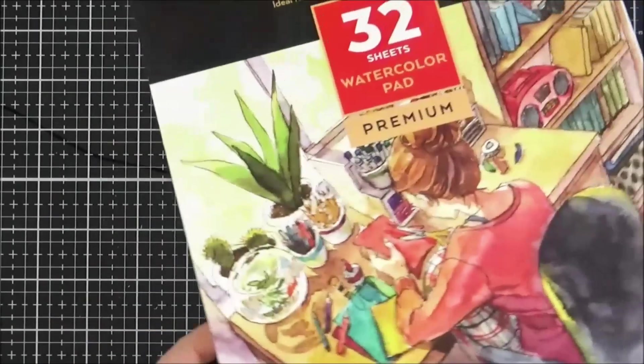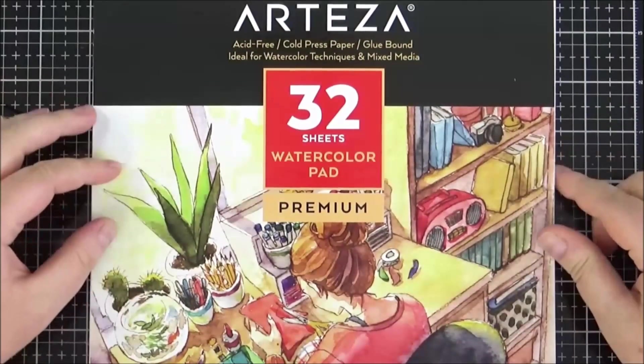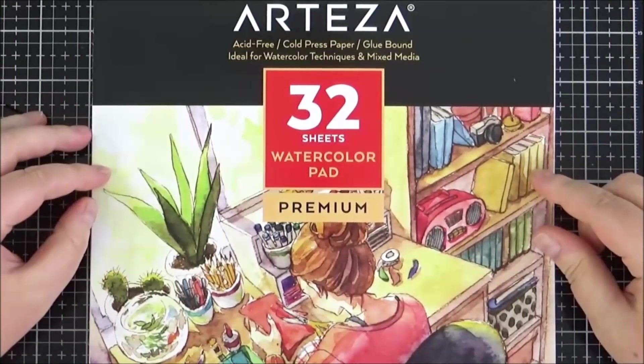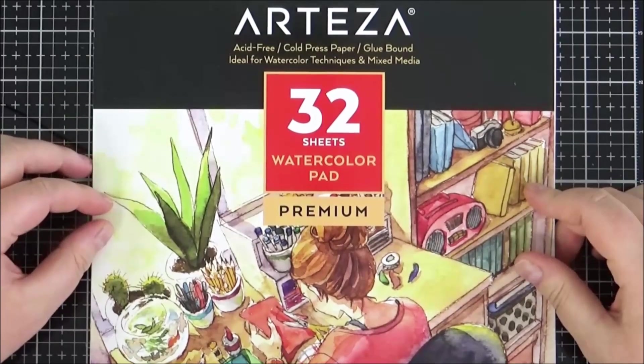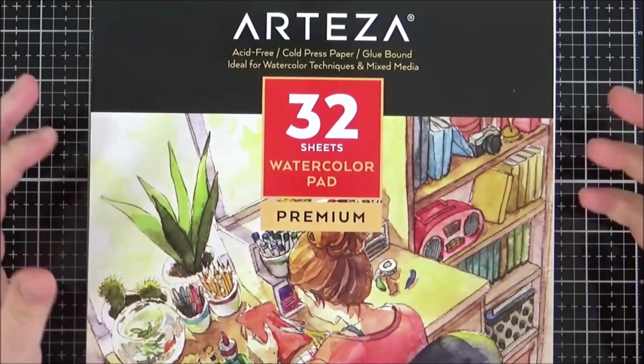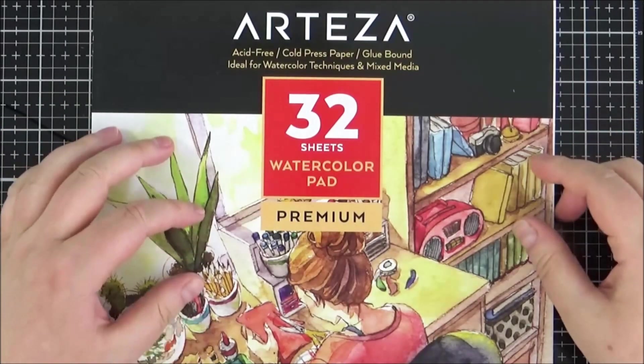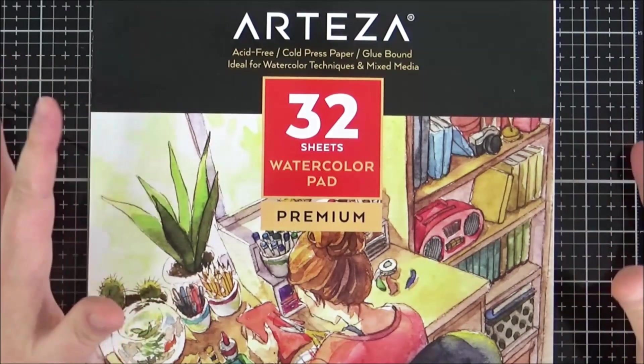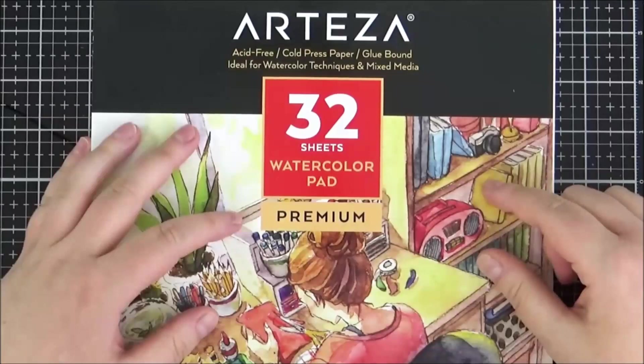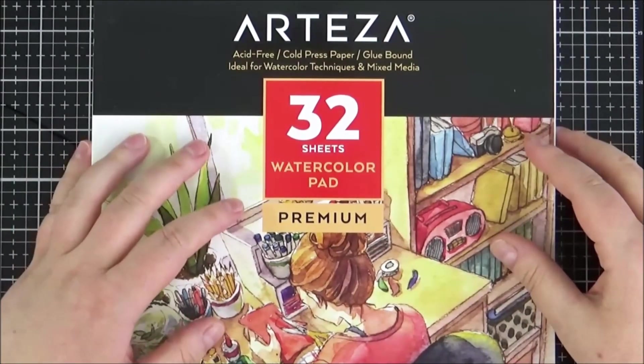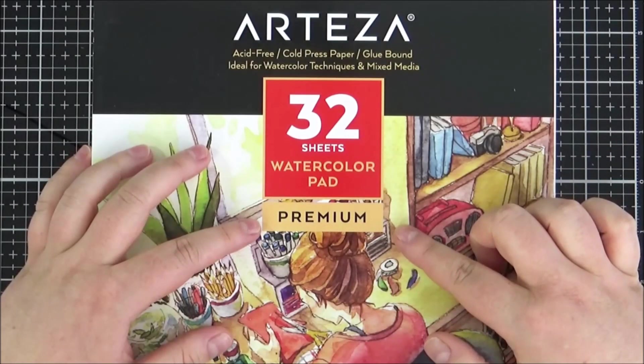Next up I picked up a pad of Arteza watercolor paper. Actually this comes as a pack of two. These are 9 by 12 inches and they are 140 pound or 300 gsm watercolor paper. I have been doing a collaboration with Arteza and they've kindly sent me some of their products and they sent me a pad of their mixed media paper and honestly I wasn't that keen on it personally that's just personal preference. So I wanted to try their watercolor paper and so I purchased this from their UK site.